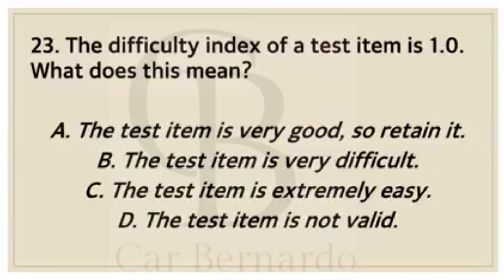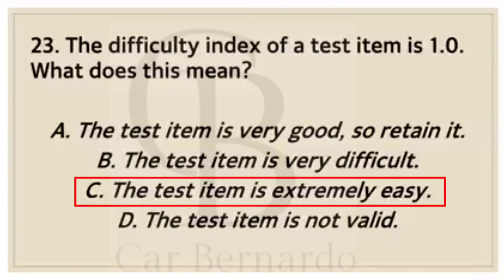Number twenty-three: The difficulty index of a test item is 1.0. What does this mean? Letter A: The test item is very good, so retain it. Letter B: The test item is very difficult. Letter C: The test item is extremely easy. Letter D: The test item is not valid. Answer: Letter C, The test item is extremely easy.